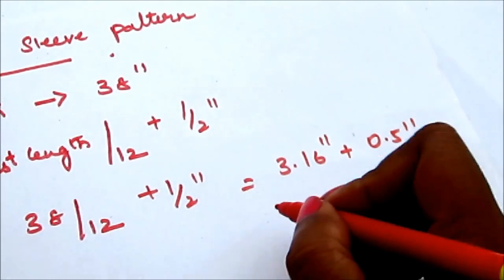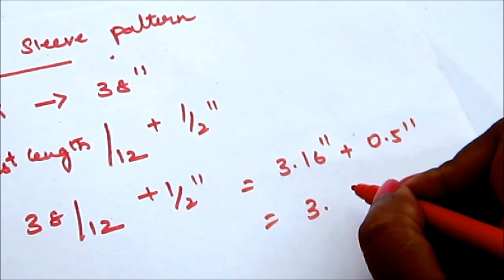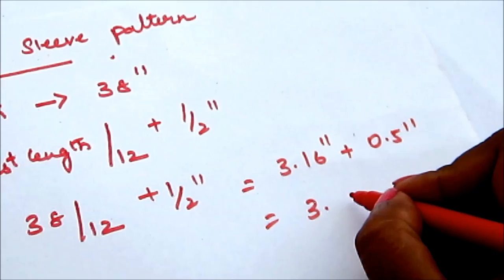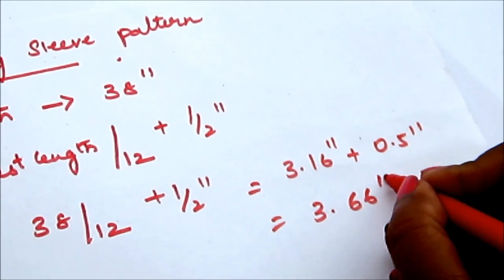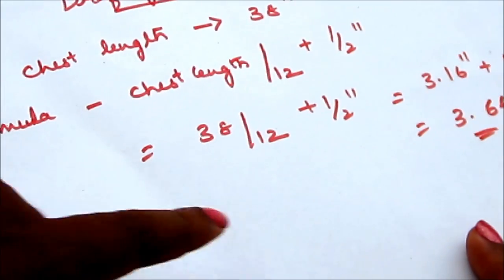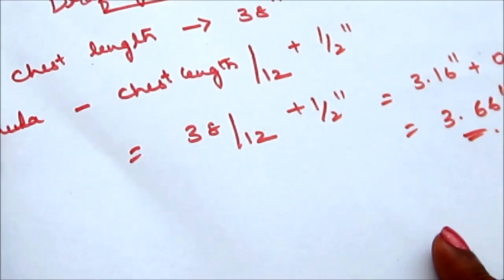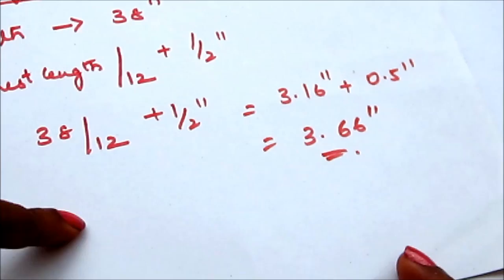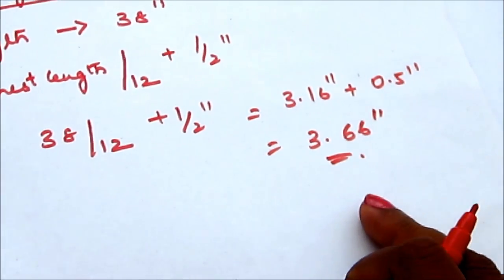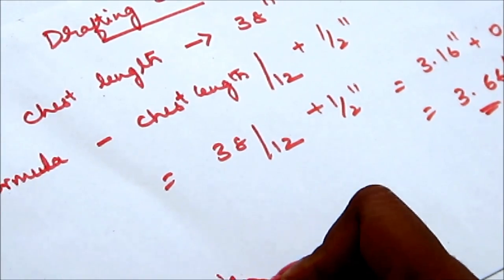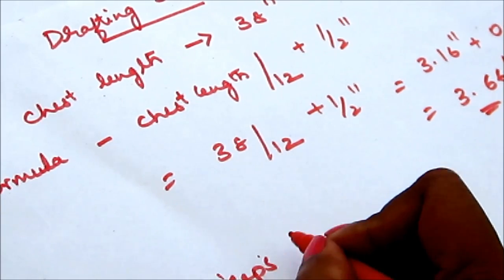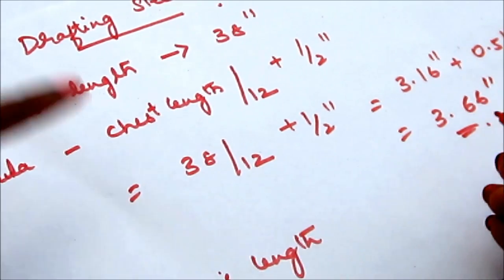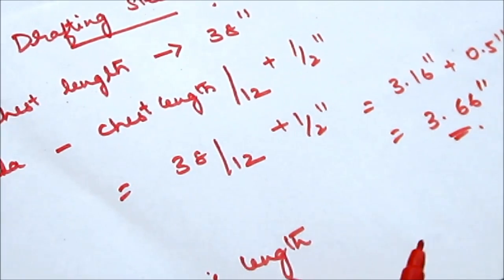So here it's 38 divided by 12 is 3.16 inches plus our adding half an inch, so it will become 3.66 inches which is my biceps length. So for any size you can draft the sleeve pattern, use the simple calculation to draft the normal sleeve pattern. This is the standard formula for calculating the sleeve.